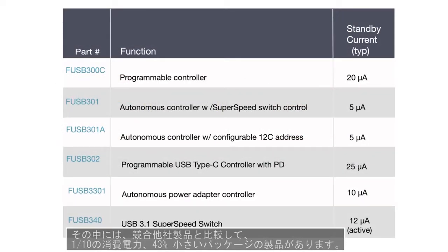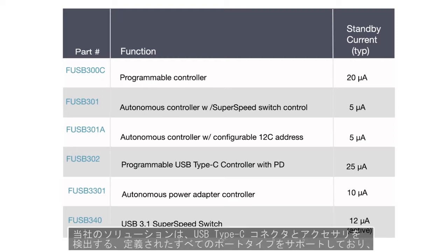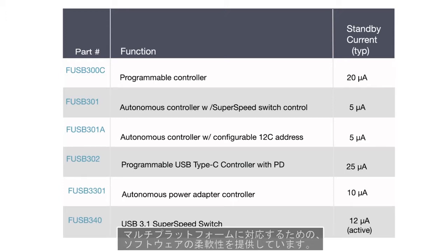Each device in the portfolio is optimized for size and power, with some solutions consuming only one-tenth the power of the nearest competitive solution in packages up to 43% smaller. The solutions cover all defined port types of the USB Type-C connector and accessory detection, while providing software flexibility for multiple platform support.